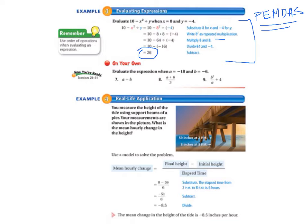So, the picture shows the pier with 59 inches at 2 p.m. and 8 inches at 8 p.m. And it asks us to use a model to solve the problem. So, it gives us a formula. The mean hourly change equals the final height minus the initial height over the elapsed time.